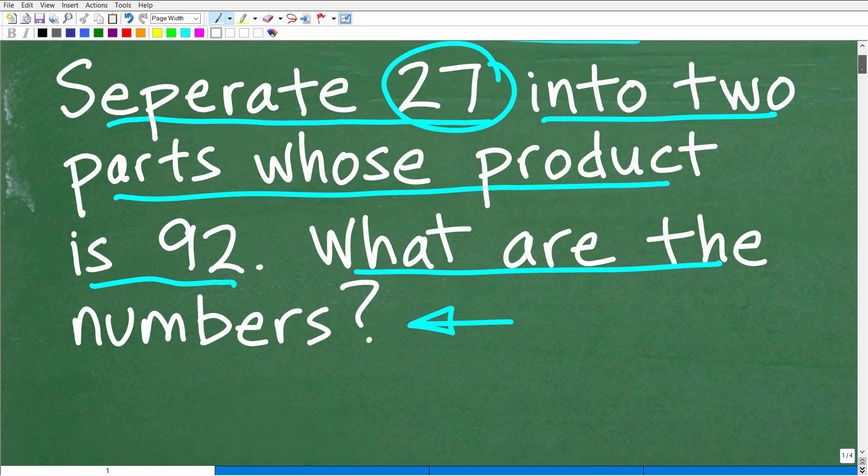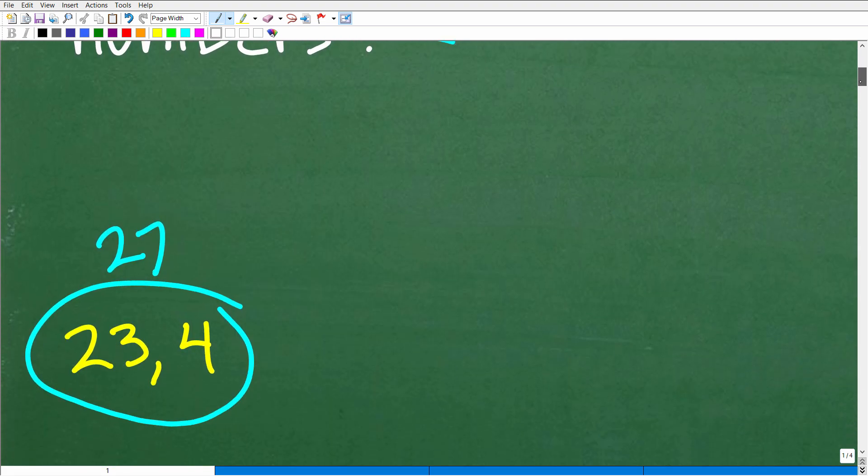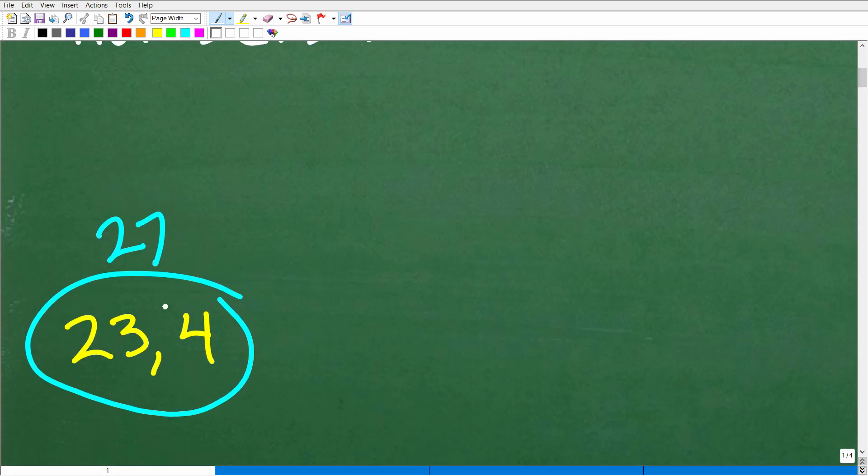Again, we wanted to separate 27 into two parts, i.e. two different numbers, right? So whose product is 92. So 23 plus 4 is 27. And then 23 times 4 is, of course, 92.